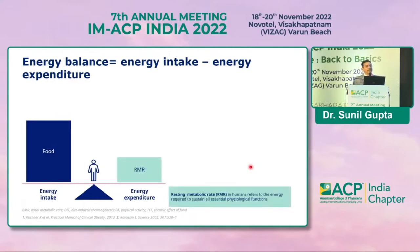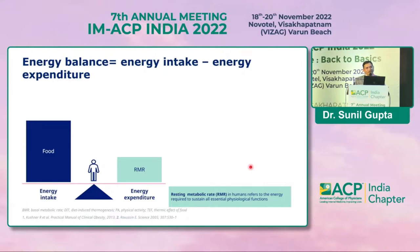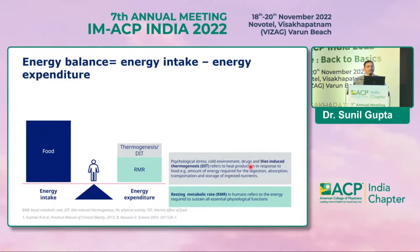Energy expenditure has multiple components. We have RMR — resting metabolic rate — which is the energy required to sustain all essential physiological functions of your body, including breathing, respiration, heartbeats, all muscle activity, and GI activity. I am emphasizing RMR because we will understand its importance when we cover why there is a rebound and why we are unable to sustain weight loss after six months or a year. Please remember the terminology: resting metabolic rate.